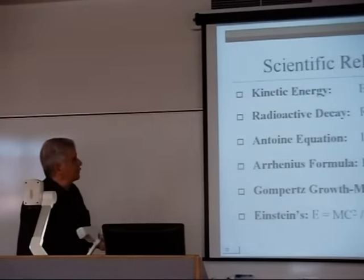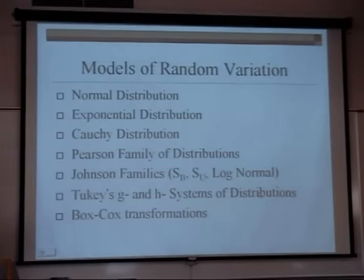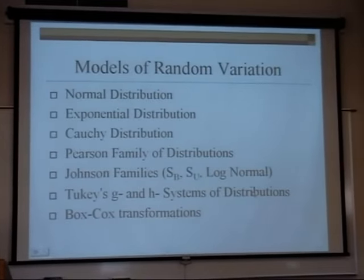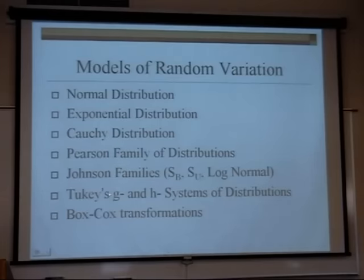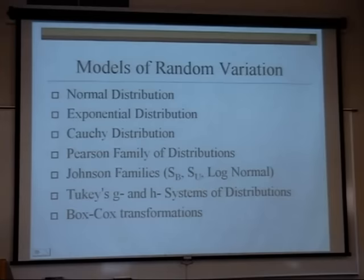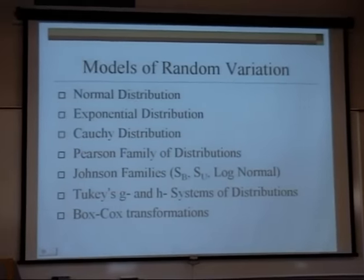Moving to theory-based modeling of random variation — here I list distributions most of you are familiar with: the normal distribution, exponential, Cauchy, Pearson family of distributions, Johnson families, Tukey's G and H system, and Box-Cox transformations. Most of these distributions are theory-based and can be axiomatically derived. From this list, the Cauchy distribution, Johnson families, Tukey's G and H system, and Box-Cox transformations are all exact special cases of the RMM model.